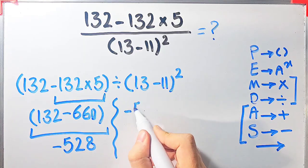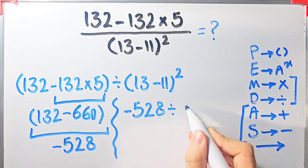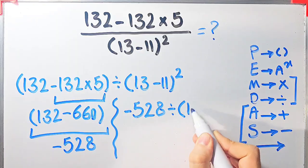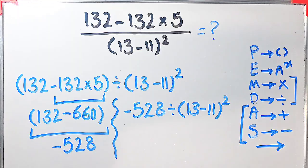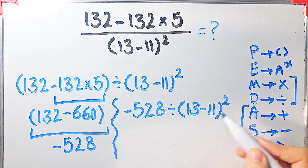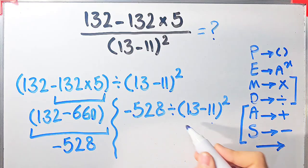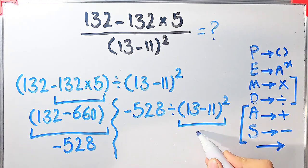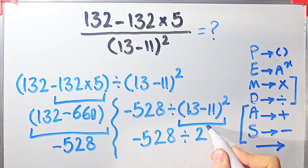The final answer of these parentheses equals negative 528. Now the question is negative 528 divided by open parentheses 13 minus 11 closed parentheses then all of them to the power of 2. Now we have division, parentheses, subtraction, and exponent. Again we simplify the parentheses: 13 minus 11 equals 2.